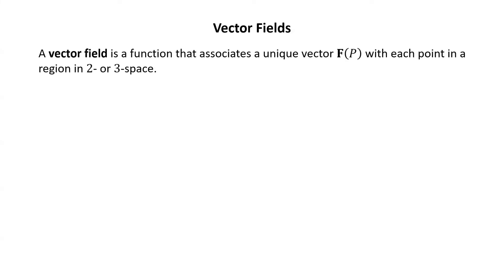Vector fields. A vector field is a function that associates a unique vector F of P with each point in a region in two or three space. Notice the bold face capital F indicating that this is a vector function, and the input is a point P that either has two coordinates if we're in two space or three coordinates if we're in three space.